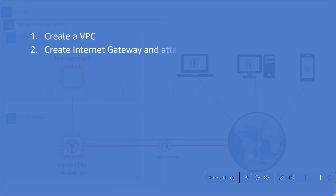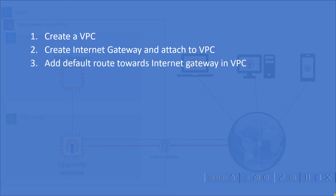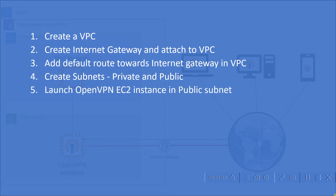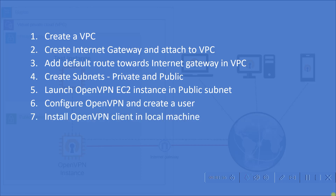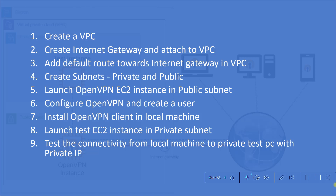These are the steps we are going to follow during this lab. We'll create a VPC and create an internet gateway and attach it to the VPC. We'll add a default route towards the internet gateway. We'll create private and public subnets, and we'll launch an OpenVPN instance in the public subnet. Then we'll configure OpenVPN and create users. We'll install the OpenVPN client on our local machine, create the test EC2 instance in the private subnet, and finally test connectivity from the local machine to the private test PC using its private IP. So let's jump into our AWS console now.